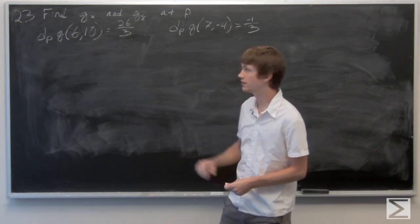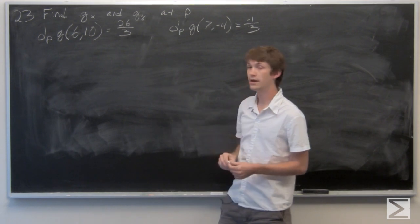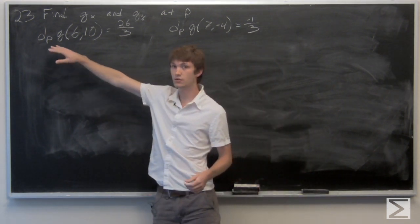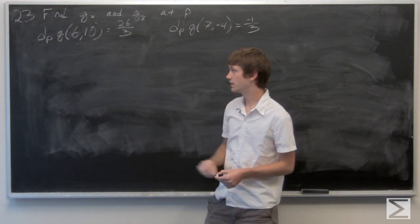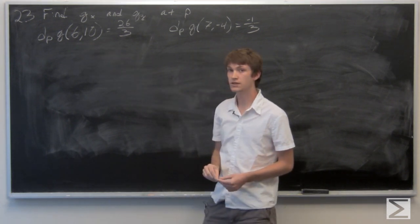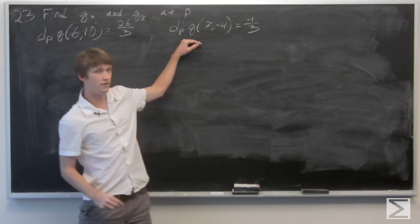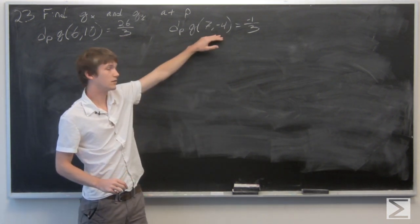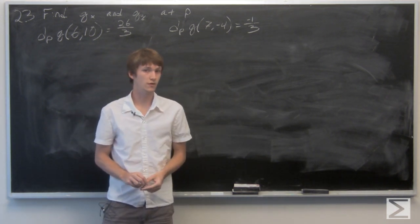In this problem, we're asked to find g sub x and g sub y at point p. We're given that the total derivative at the point p of g with respect to the vector (6, 10) is equal to 26 over 3. And we're told that the total derivative at the point p of g with respect to the vector (7, -4) is equal to negative 1/3.